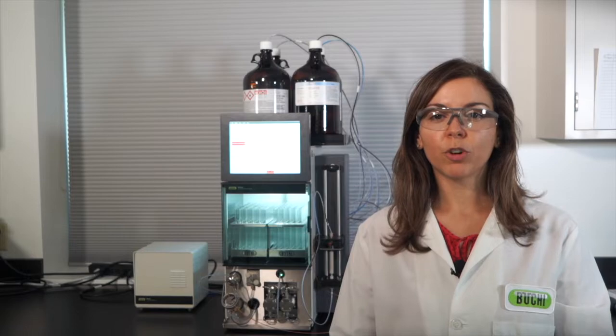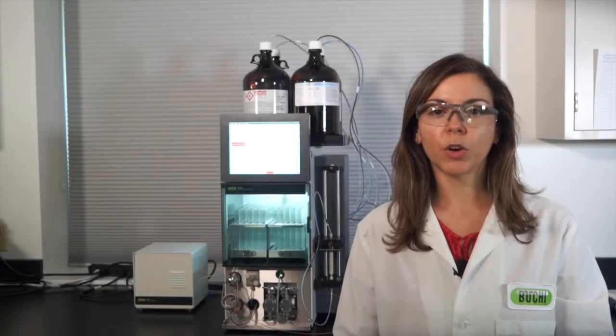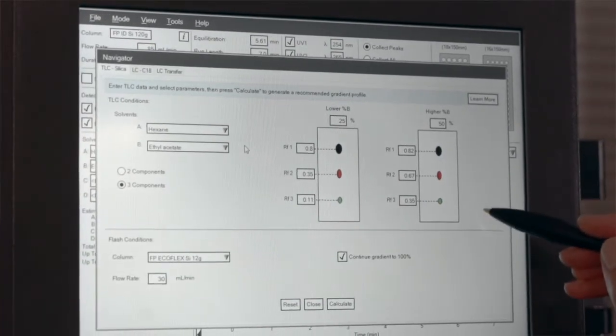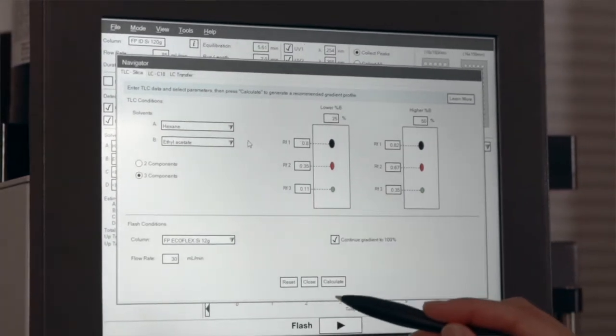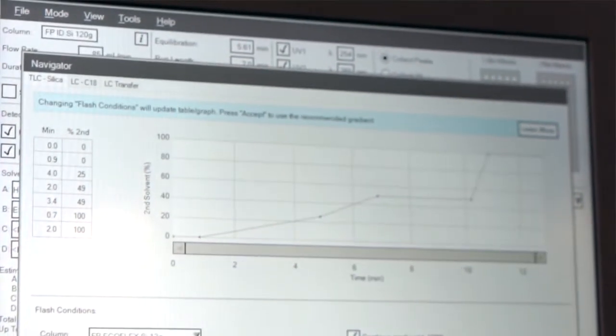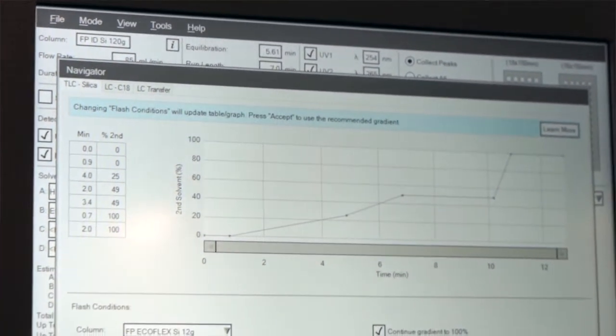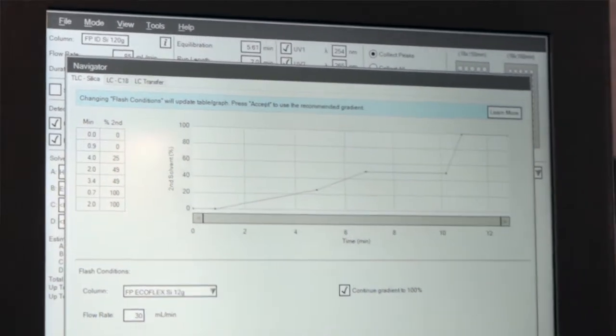If you have a new mixture where you need to develop a separation gradient, the Navigator software can provide a great starting point based on TLC runs or LC data. To use TLC runs, perform two runs at different solvent ratios and record the RF values. Input the percentage of the solvents and the RF values for each plate, select the desired cartridge, and watch the Navigator software effortlessly develop a gradient for your precious sample.